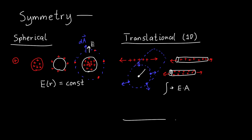Suppose I'm sitting on an infinite line charge — it stretches as far as the eye can see. If I look to my left, I see an infinite amount of charge. If I look to my right, I see the same exact thing.